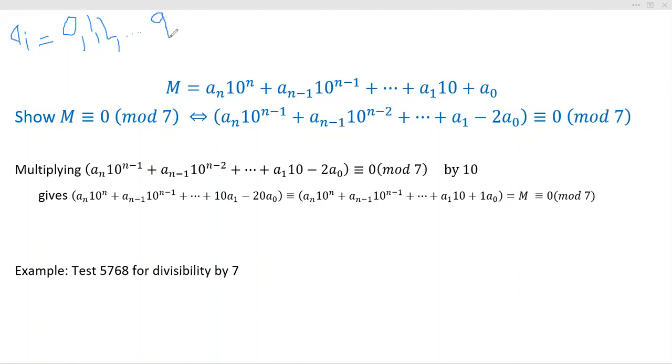Okay, now there's a strange-looking result that actually ends up being a very nice divisibility test. We're going to show that if M is divisible by seven, that's what this means. M congruent to zero mod seven means seven divides M, and that's the same thing as saying M is a multiple of seven. And that's true if and only if this strange-looking result is true.